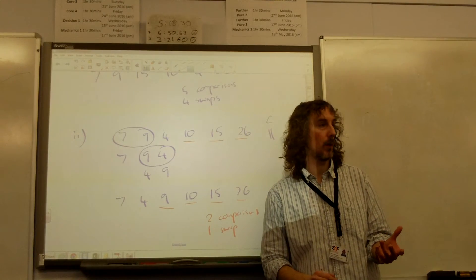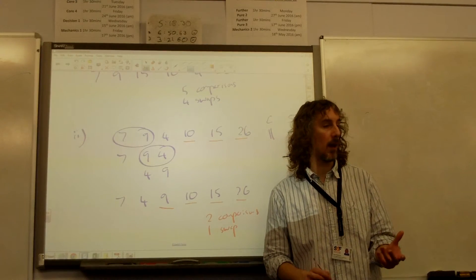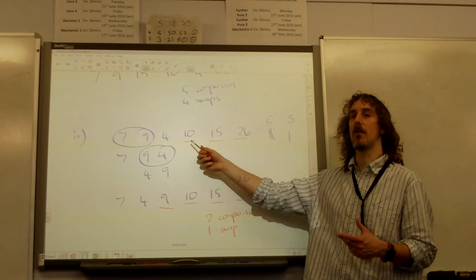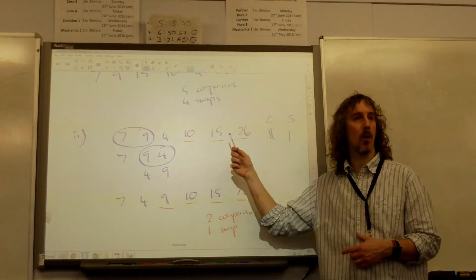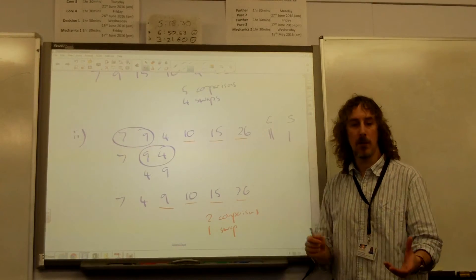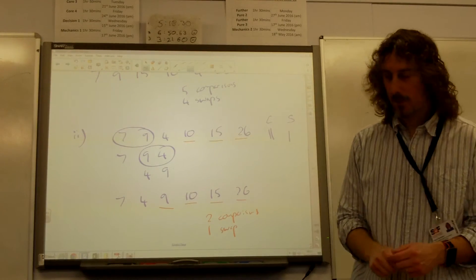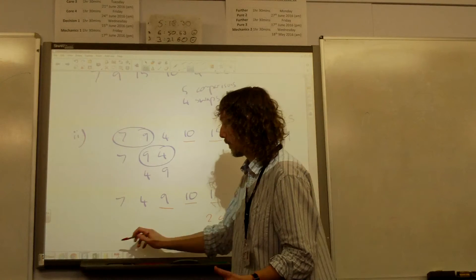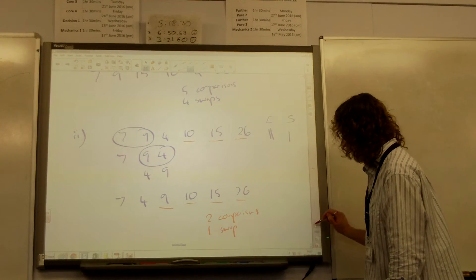Now where this went wrong for a few of you was that you didn't realize that we were already in the correct position for those numbers. So you carried on doing comparisons along to the end. You ended up with too many comparisons for what the stage was involved. Does that make sense?